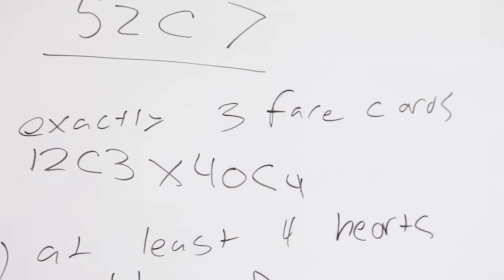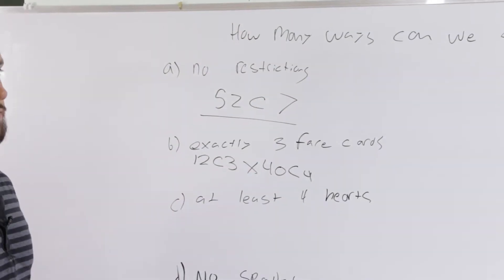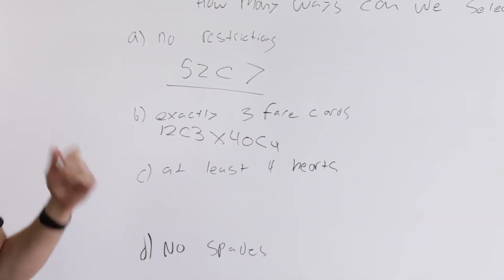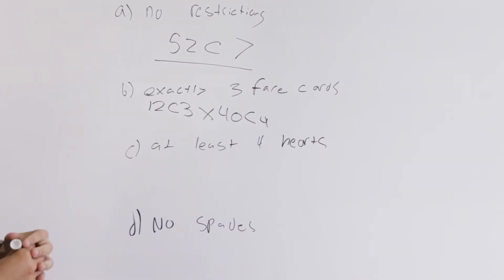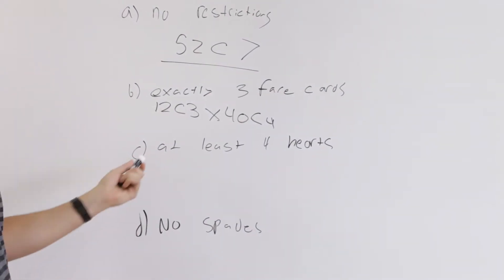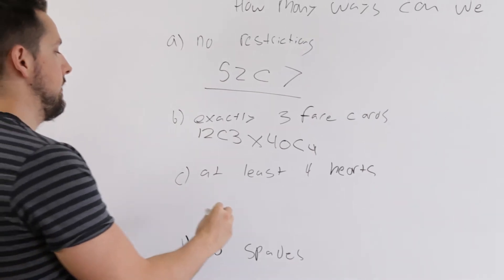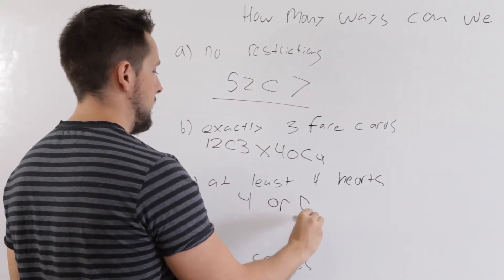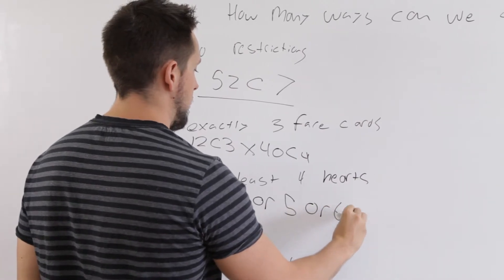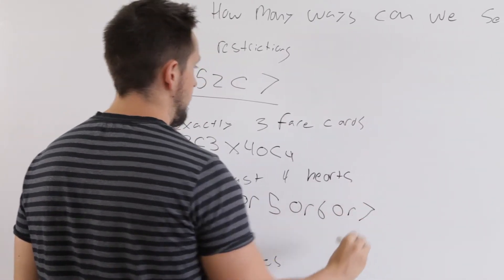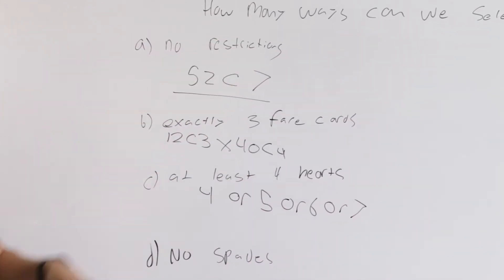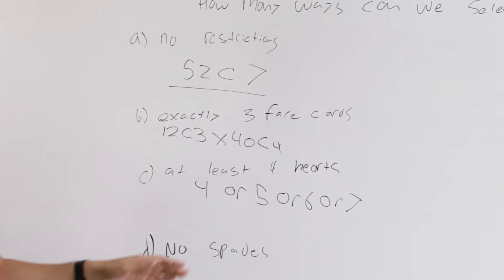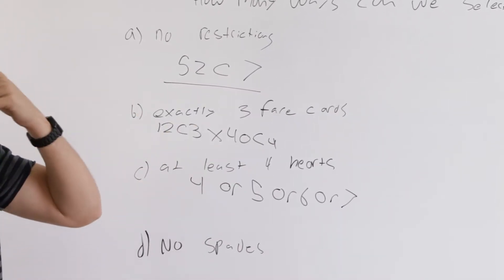Now the next thing we have is at least four hearts. So what is at least four hearts mean? So before we do this one, we'll write it out in a long way and then calculate it. So at least four hearts means that you could have four hearts or five hearts or six hearts or seven hearts because we're having a seven card hand dealt to us. So now we need to do separate calculations for each of these.